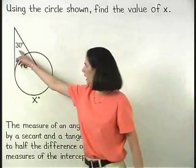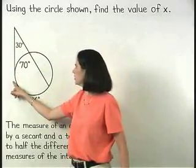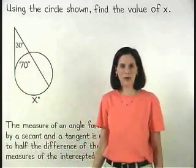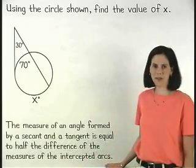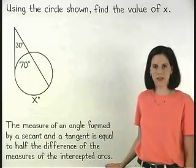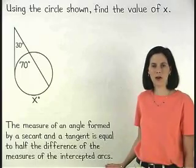Notice that our given angle is formed by a secant and a tangent. And remember from the previous example that the measure of an angle formed by a secant and a tangent is equal to half the difference of the measures of the intercepted arcs.